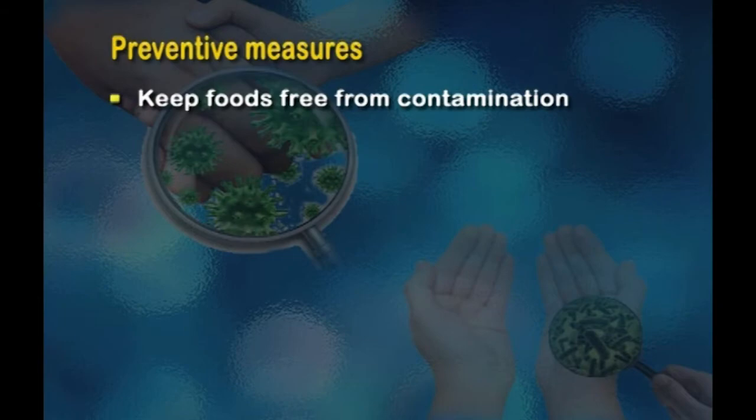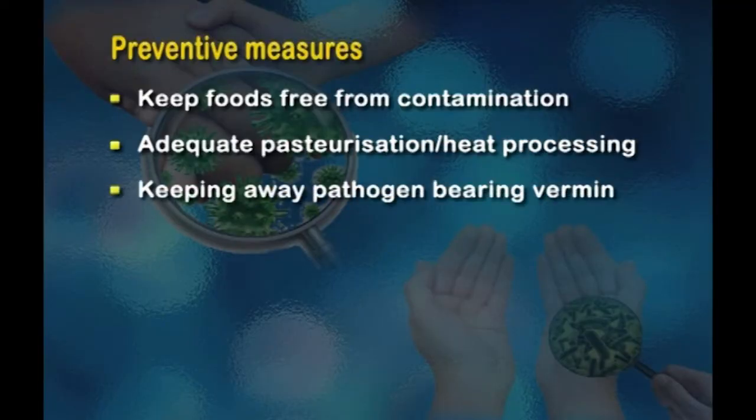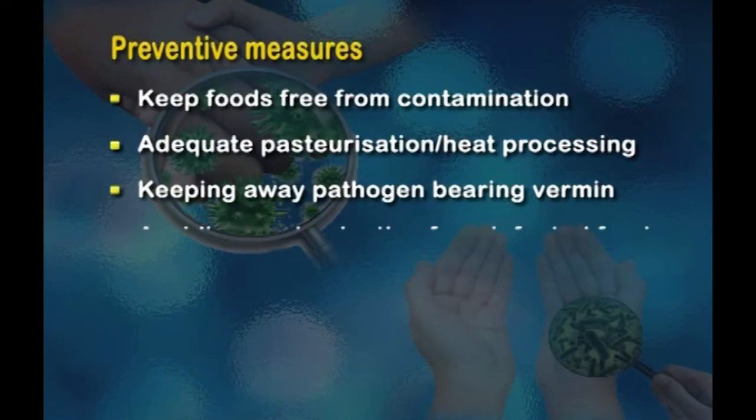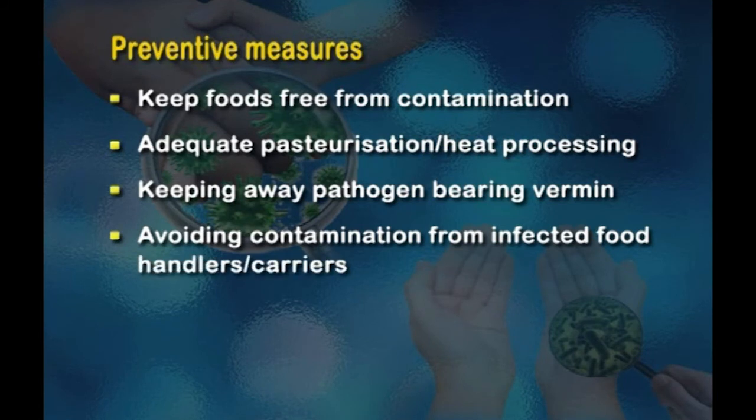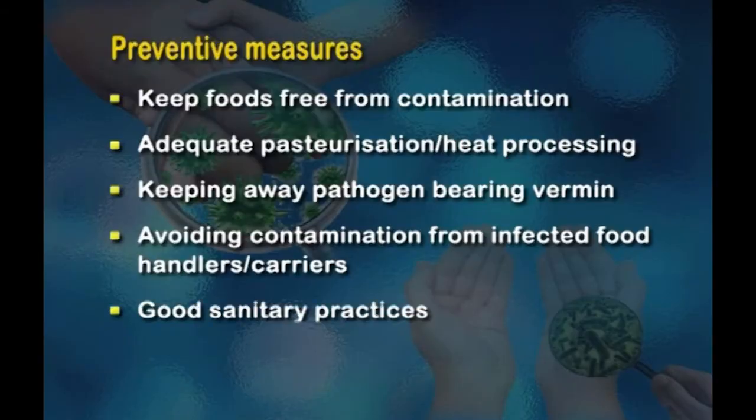Finally, let us look at the preventive measures to prevent a food-borne disease outbreak. First, keep foods free from contamination by selecting uncontaminated foods like pasteurized milk. Adequate pasteurization and heat processing of animal foods is very important. Keep away pathogen-bearing vermin — all food service establishments should be free from rodent growth, flies, and insects which transmit microorganisms. Avoid contamination from infected food handlers or carriers through basic food hygiene training. Good sanitary practices such as washing hands and kitchen equipment thoroughly are essential. The time gap between preparing and serving food should be reduced so food is not kept for long periods at warm temperatures.